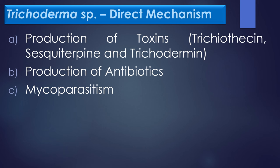Trichoderma species can act directly on phytopathogens by production of toxins such as Trichothysin, Cescutifine, and Trichodermy, and also by the production of antibiotics and mycoparasitism.